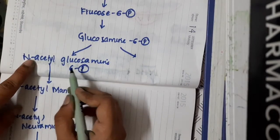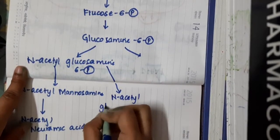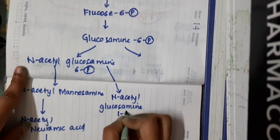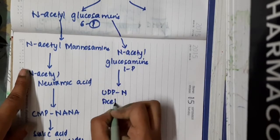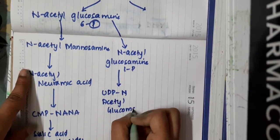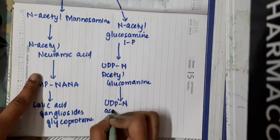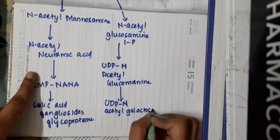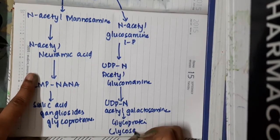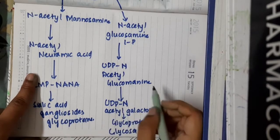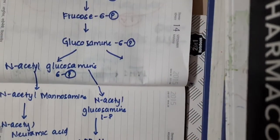This N-acetylglucosamine-6-phosphate, in the presence of isomerase, forms N-acetylglucosamine-1-phosphate. This combines with UTP to form UDP-N-acetylglucosamine. In the presence of epimerase, it forms UDP-N-acetylgalactosamine, which results in the formation of glycoproteins and glycosaminoglycans. Sometimes, UDP-N-acetylglucosamine directly forms glycoproteins and glycosaminoglycans.